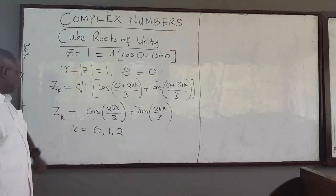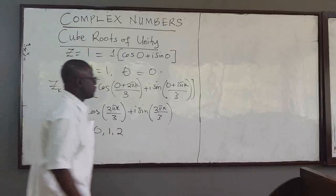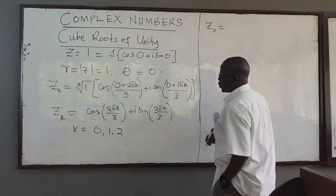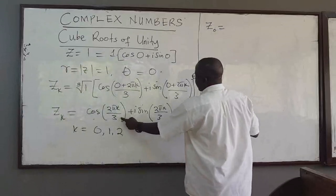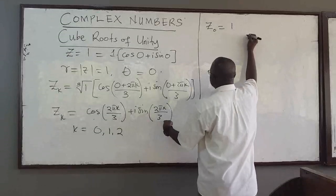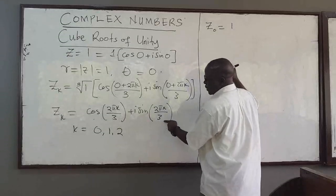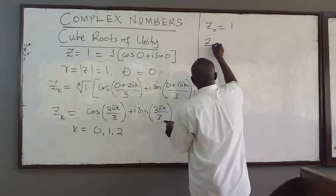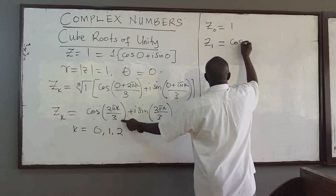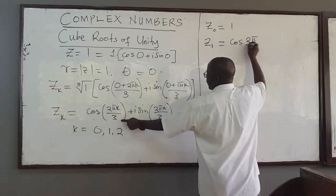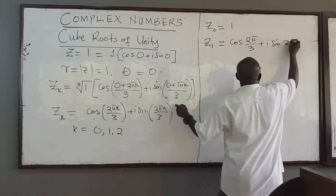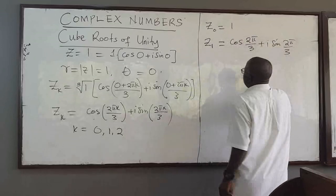Plugging in the values of k gives us the three cube roots. When k equals zero, Z sub zero equals cosine of zero plus i sine of zero, which is one. When k equals one, Z sub one equals cosine of two pi over three plus i sine of two pi over three. That is our second root.